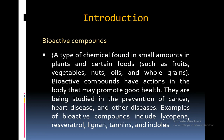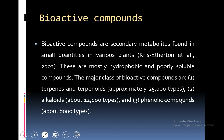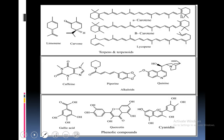Starting with the introduction: what are the bioactive compounds? These are compounds typically found in small amounts in plants and certain foods, fruits, vegetables, nuts, etc. Bioactive compounds have actions in the body that may promote good health. They are being studied in the prevention of cancer, heart diseases and other diseases. Many examples of bioactive compounds are lycopene, lignin, tannins and indols. Bioactive compounds are secondary metabolites found in small quantities in various plants. They are the most hydrophobic and poorly soluble compounds. The major class of bioactive compounds are terpenes and terpenoids,